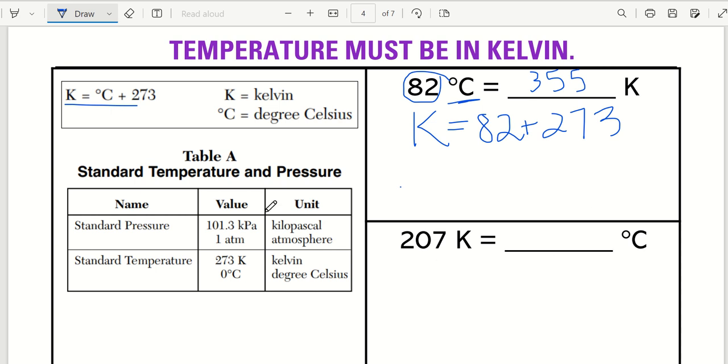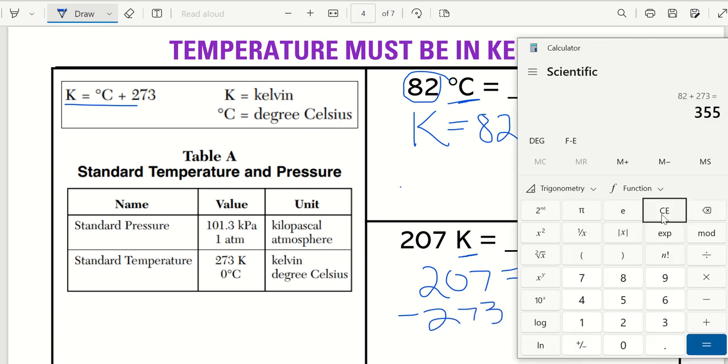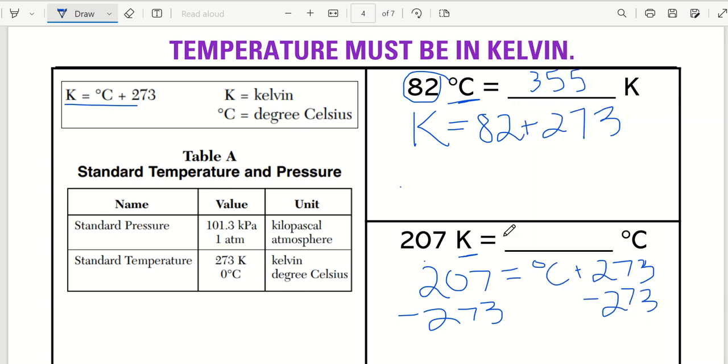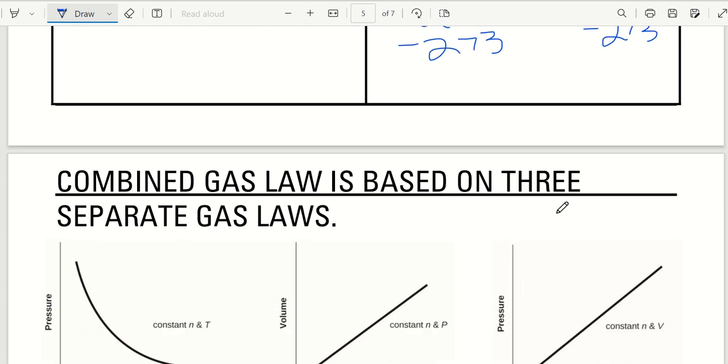Same thing you do here, but this, the unit with the number I have is Kelvin. So I do 207 equals degrees Celsius plus 273. How do I solve for degrees Celsius? Minus 273 from both sides. And I need to do 207 minus 273. And I get negative 66. Again, this is why we don't use Celsius. That's why we use Kelvin. There we go.